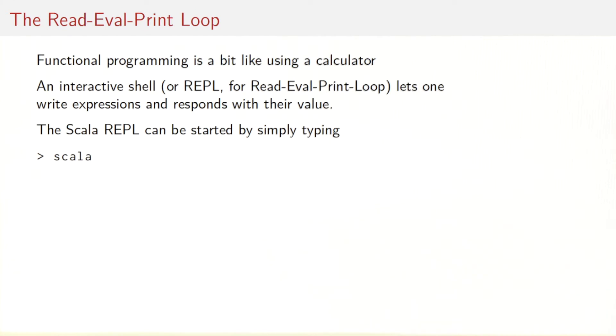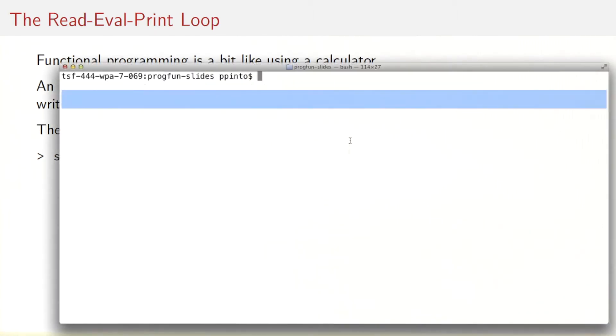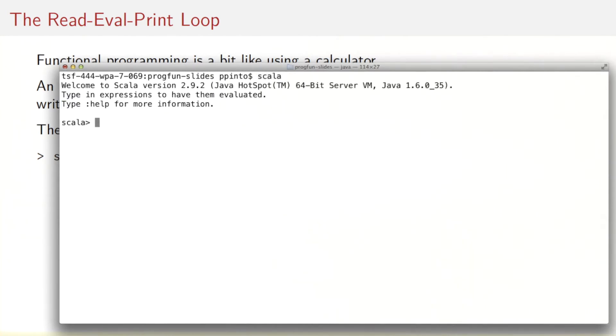One way to approach functional programming is to see it a little bit like a calculator. In fact, most functional languages have an interactive shell. That's also sometimes called a REPL, which stands for read, eval, print loop. And in that shell you can type expressions and it will respond with the results of evaluating these expressions. In Scala you can start the REPL simply by typing Scala.